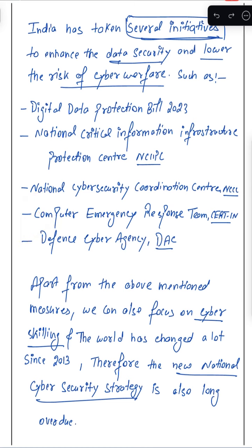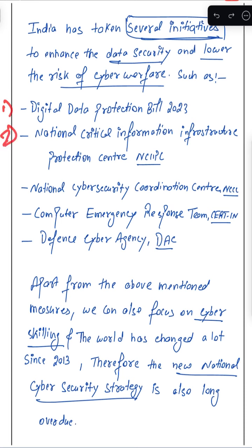Bullet form is a good way to present things when you have multiple points. If you write them well and in a relevant manner, you will find better chances of scoring marks. For example: Digital Data Protection Bill 2023 — you have to present it in a good and structured way.